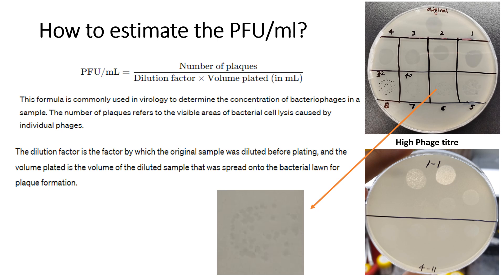This shows that as we dilute the phages, we are decreasing the titer. Look at these two plates to differentiate high phage titer from low phage titer. The lower plate has very few spots, while the upper plate, even after 8 dilutions, has a very high concentration of phages. To measure the PFU, we count the plaques — in the 8th dilution there were 32 plaques. The dilution factor is 8, and the volume plated on the Petri plate was 10 microliters.